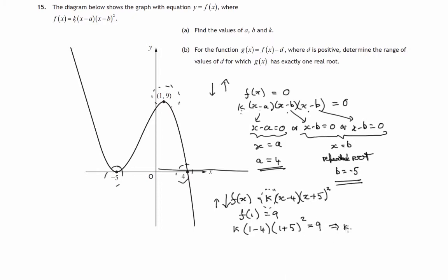So therefore, k times negative 3 times 6 squared equals 9. So to find the value of k, we'll divide both sides by negative 3 times 6 squared. So we'll get a negative answer. 9 over 3 times 36. We'll cancel 9. 9 into 9 is 1. 9 into 36 goes 4. We get negative 1 over 12. So the value of k must be negative 1 twelfth.